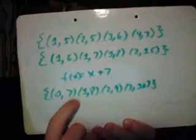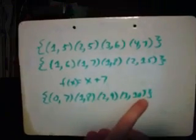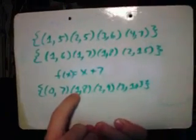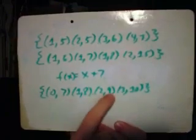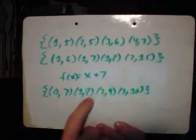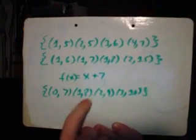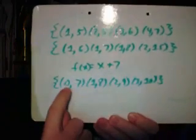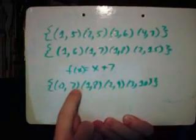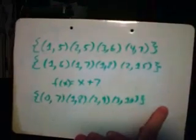Notice that the number zero is paired with seven, but it is not paired with eight, nine, or ten. The number one is not paired with seven, nine, or ten. The number two is not paired with seven, eight, or ten. And the number three is not paired with seven, eight, or nine. So if one element of the domain is paired with only one element of the range, then it becomes a one-to-one function.